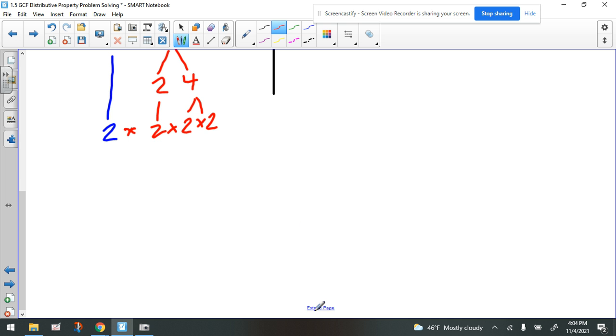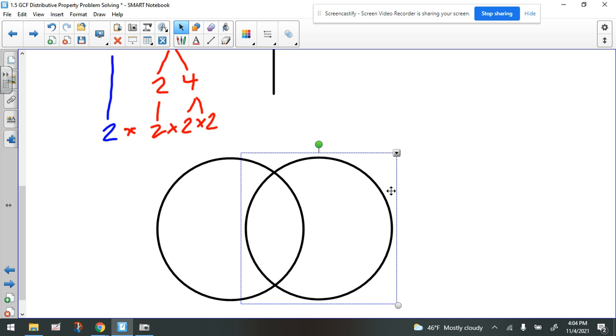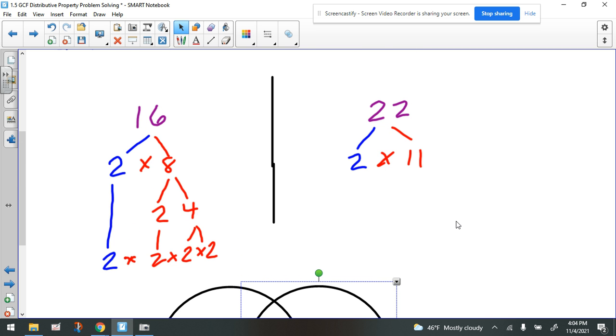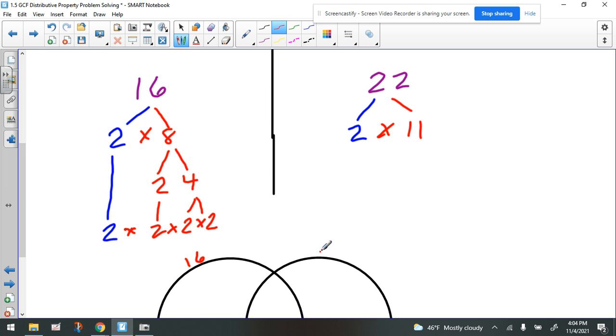Now it's time to start making our Venn diagram. One of the circles will be talking about the prime numbers for the first number. The other will be the prime factorization for the other number. That first circle, let's have that be for 16. And this circle will be the prime factorization for 22.